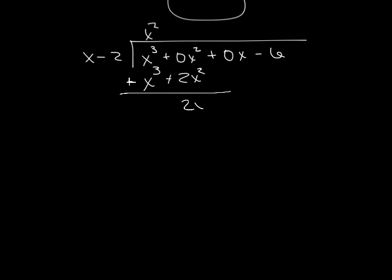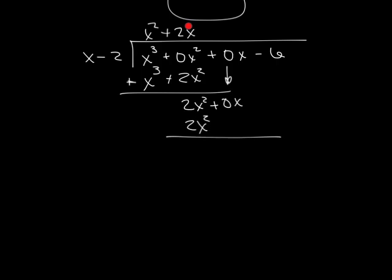We subtract: x cubed terms cancel. Zero minus negative 2x squared equals plus 2x squared. We bring down our 0x. Now x goes into 2x squared: 2 minus 1 gives 2x. We multiply 2x times x to get 2x squared — matching what's above. Then 2x times negative 2 gives negative 4x. We subtract; those cancel, and zero plus 4x is 4x.